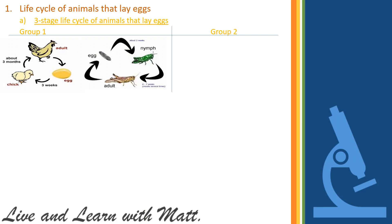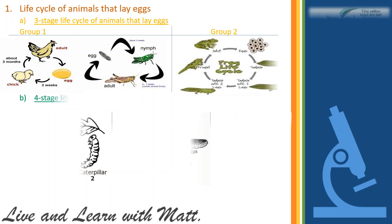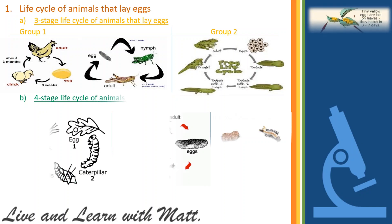Group two — after hatching from their eggs, the young go through changes as they grow. They will look like their parents when they are fully grown. Examples: frogs.